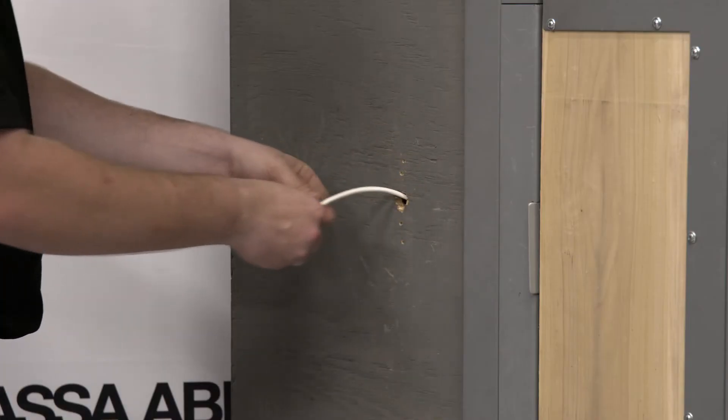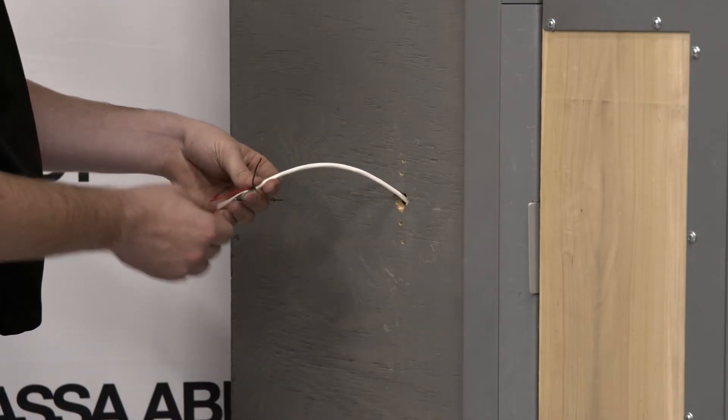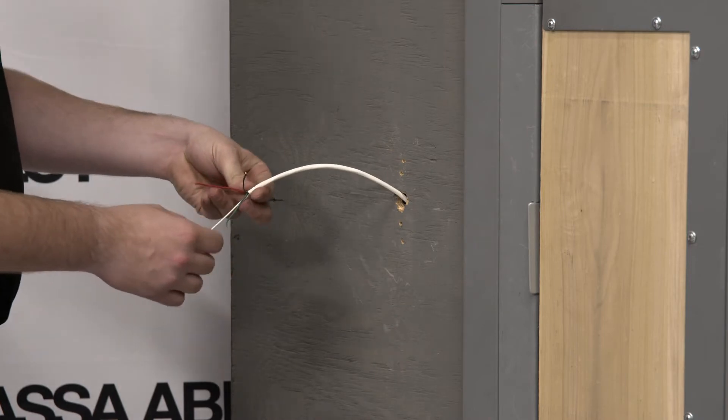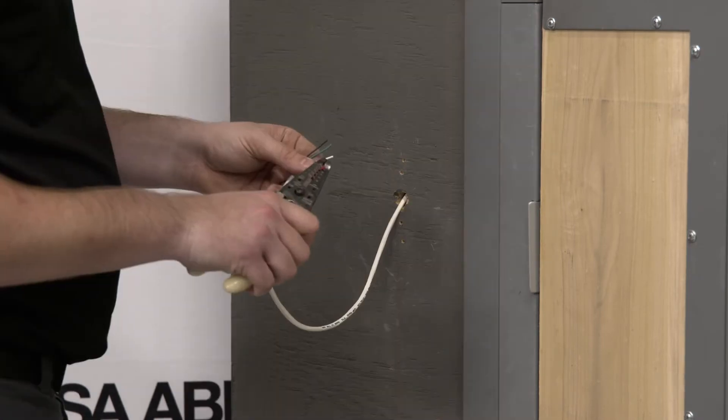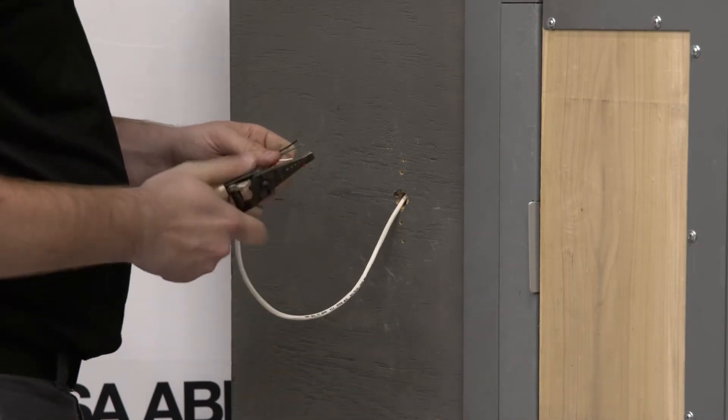Pull the wire from the mounting box to the operator, leaving enough slack on each end to make the proper connections. Now that the old push-to-open button is removed, let's start by wiring the new wave-to-open switch.